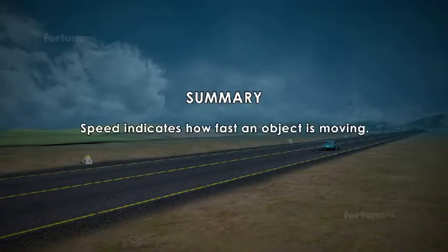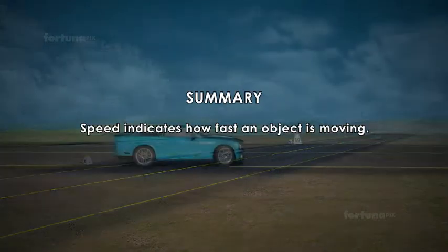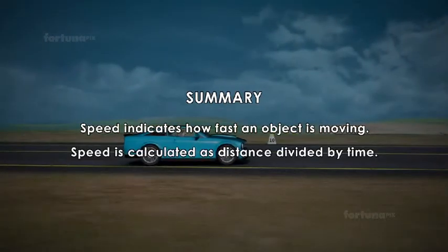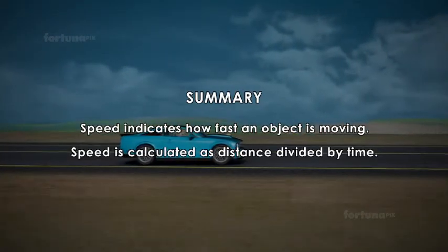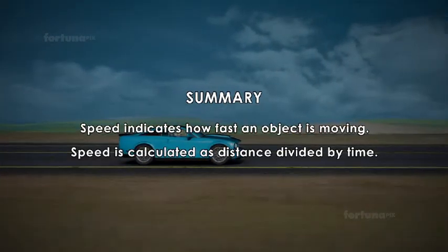Summary: Speed indicates how fast an object is moving. Speed is calculated as distance divided by time.